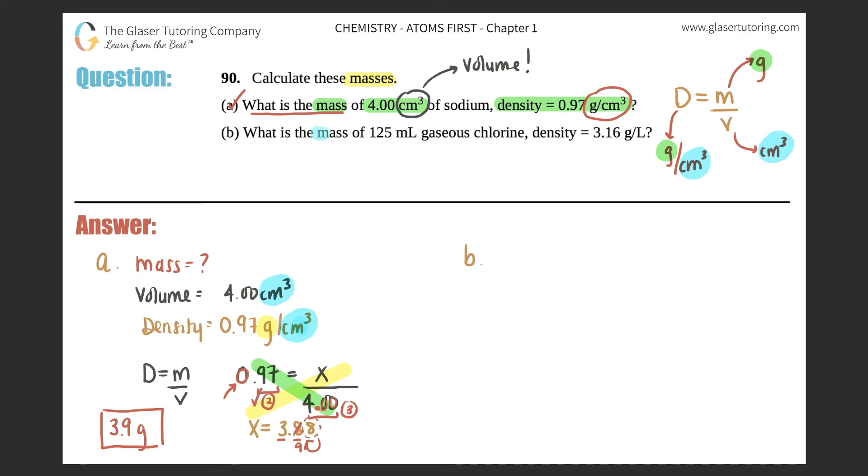What is the mass of 125 milliliters gaseous chlorine? Density is 3.16 grams per liter. Okay. So what is the mass? That's the question. So mass is a question mark. We don't know that.